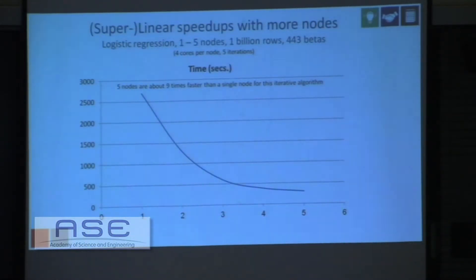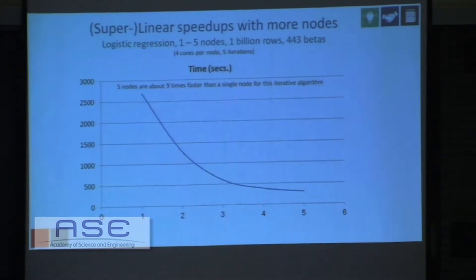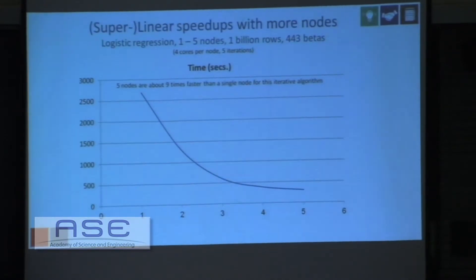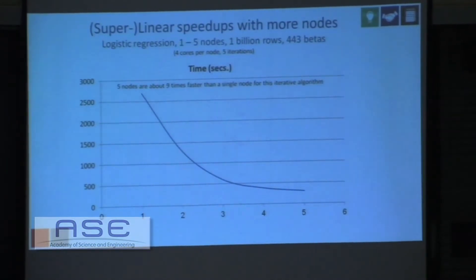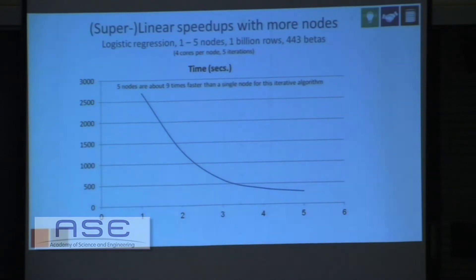Another scalability chart: instead of looking at number of rows, we're looking at number of nodes. Going from one node to five nodes, we see a speedup of 9x — a super-linear speedup — because when we add nodes, we're also adding memory. Although we don't require the data to fit in memory, data is cached in memory, and on iterative algorithms such as logistic regression, more aggregate memory means more data cached, saving time on the second, third, and fourth passes through the data. This shows excellent scaling with increasing number of nodes.